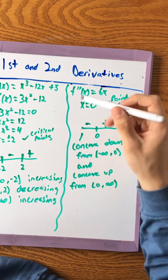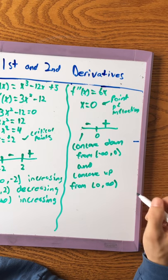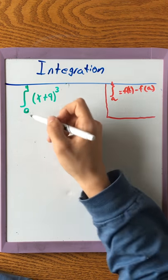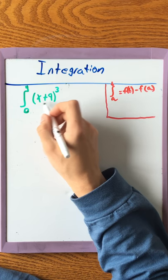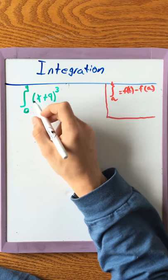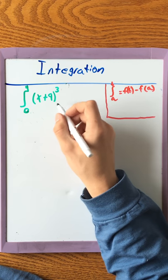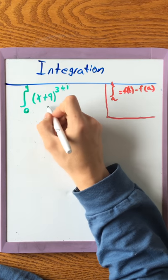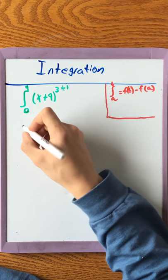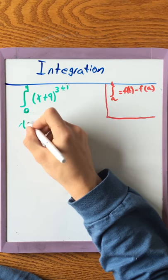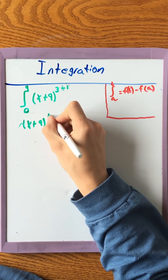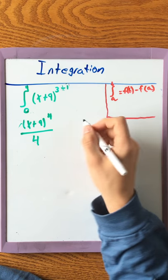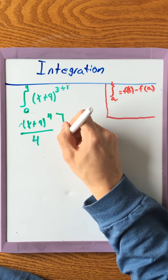Now I'm going to demonstrate simple integration. Our bounds are from 0 to 4 and our function is (x+9)³. To integrate, you add 1 to the exponent and divide by the new exponent, giving (x+9)⁴ divided by 4.